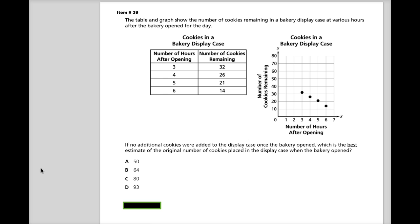So, once the door opens, how much stuff is left? Apparently they only had 32 cookies, so this must not be the most hoppin' bakery. Of course, it's in the display case, so I guess probably so. If no additional cookies were added to the display case once the bakery opened, what is the best estimate of the original number of cookies placed in the display case when the bakery opened?